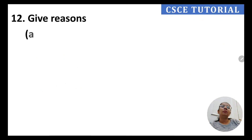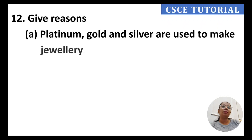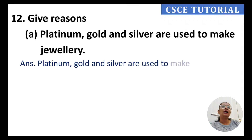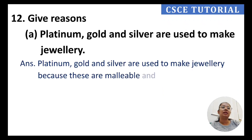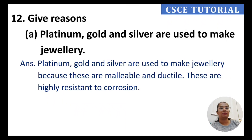Question 12, part A: Why are platinum, gold, and silver used to make jewellery? Because these metals are malleable and ductile — they can be beaten into sheets and drawn into wires. They are also highly resistant to corrosion, meaning they do not tarnish easily.